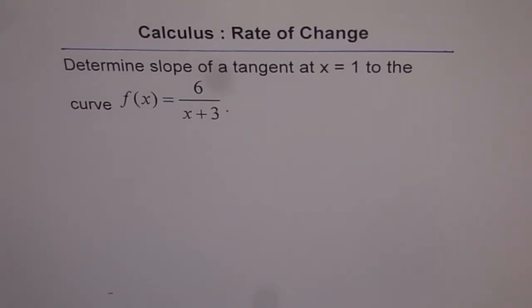Now, let's practice finding rate of change or slope of a tangent for different kinds of function. So, in this example, we have a transformed reciprocal function.